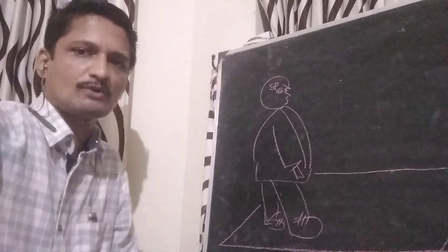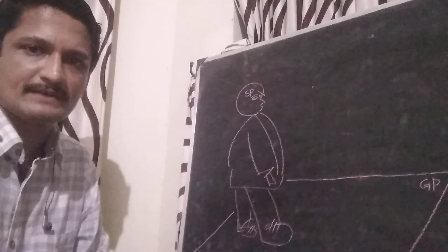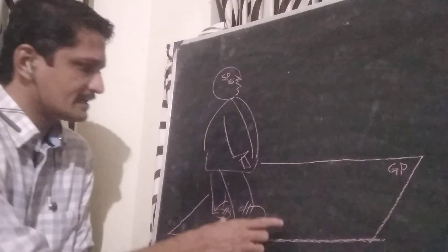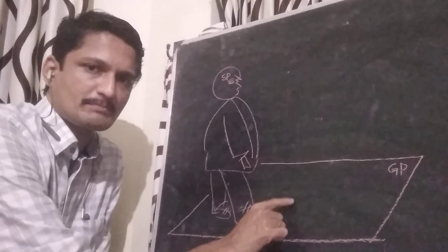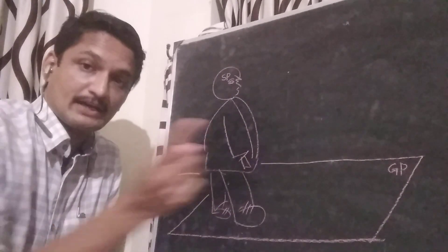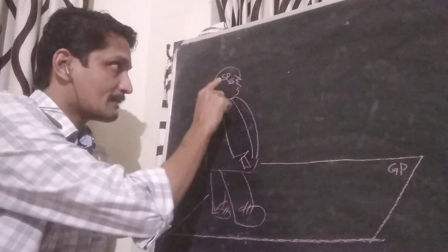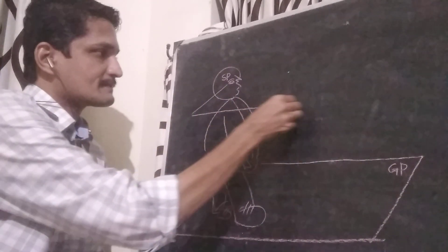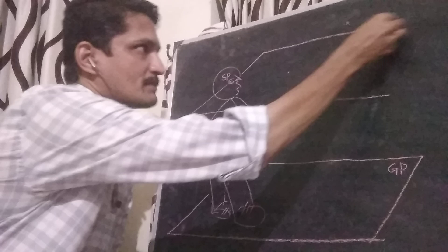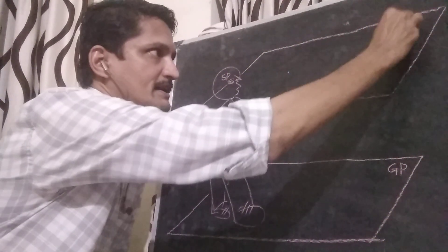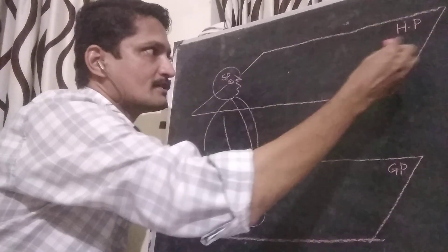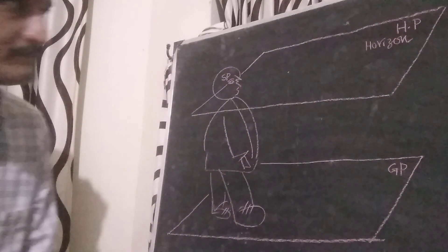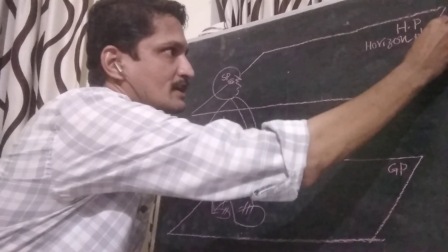GP stands for ground plane. The observer is in the ground plane. Next concept: a horizontal plane, which is passing through SP — a horizontal plane which is parallel to GP and also passing through SP. This plane is known as the horizontal plane, or horizon plane.